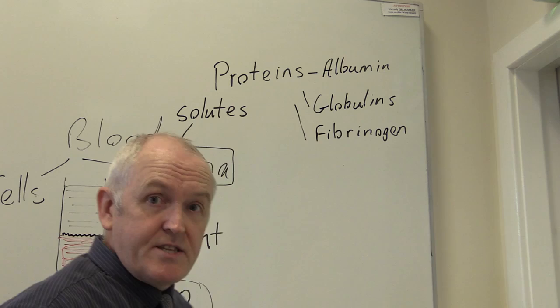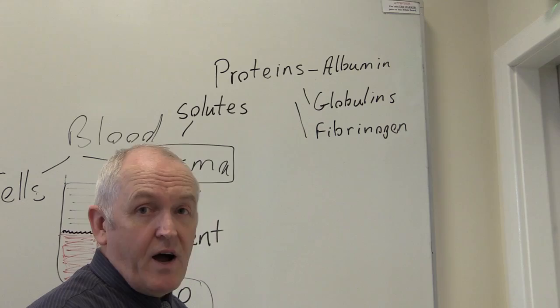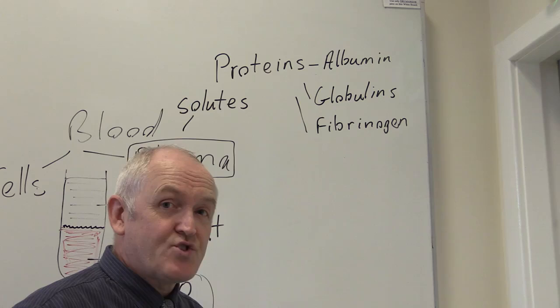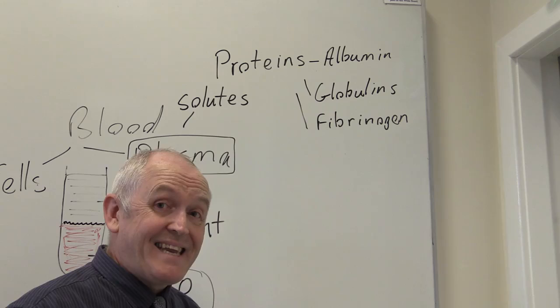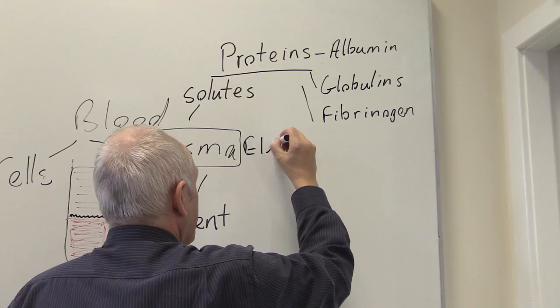Fibrinogen is the clotting protein. Under the right circumstances, fibrinogen, which is soluble in the plasma, will be converted to fibrin, which is insoluble and forms long sticky strands to which red cells and white cells will adhere, forming a clot. So the plasma contains proteins, and it also contains electrolytes.